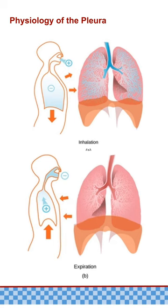During normal breathing, the pressure within the pleural cavity, known as intrapleural pressure, is slightly negative compared to atmospheric pressure. This negative pressure keeps the lungs expanded and helps prevent them from collapsing. When the diaphragm and intercostal muscles contract during inspiration, the volume of the thoracic cavity increases, causing a decrease in intrapleural pressure. This decrease in pressure creates a pressure gradient, allowing air to flow into the lungs. During expiration, the diaphragm and intercostal muscles relax, causing the thoracic cavity to decrease in volume, which increases intrapleural pressure, facilitating expiration.